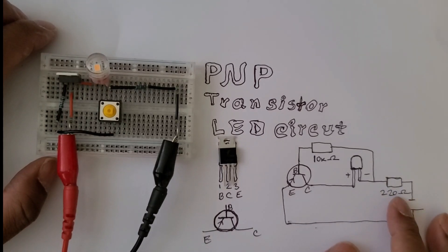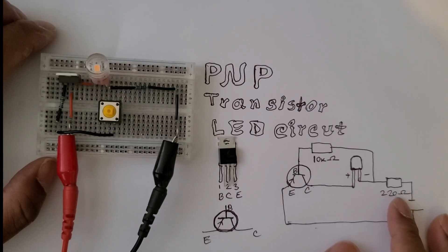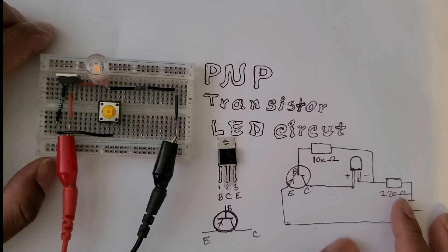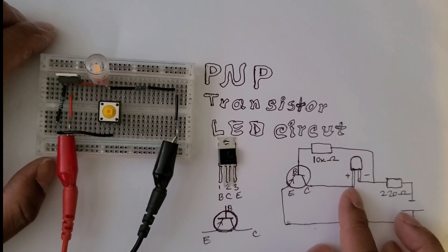with the ground through a 220 ohm resistor. The collector is connected with the positive pin of the LED circuit.